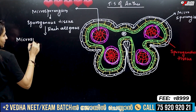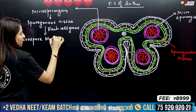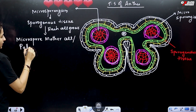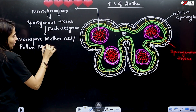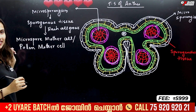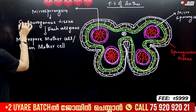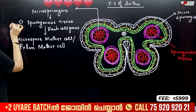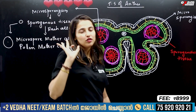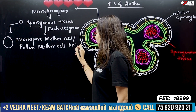Let's see how those cells grow. The cell is called the microspore mother cell — also the same as pollen mother cell. We have one cell in our sporogenous tissue: the microspore mother cell.